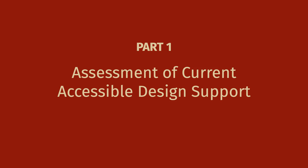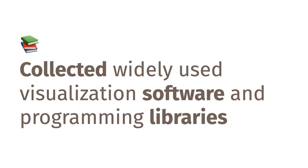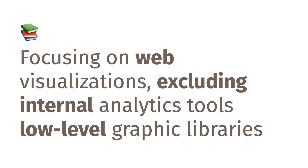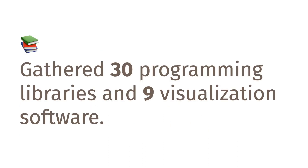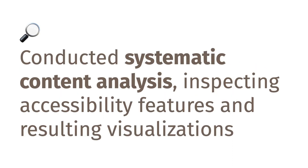Let's first take a look at the first part where we assess current accessible design support. We compiled a list of popular visualization software and programming libraries through a systematic web search. Since the web is the primary channel for information consumption, we focused on web-based visualizations, excluding internal analytic tools and low-level graphic libraries. We collected 30 programming libraries and 9 visualization software in total, and conducted a systematic content analysis inspecting the accessibility features and resulting visualizations created by the tools.